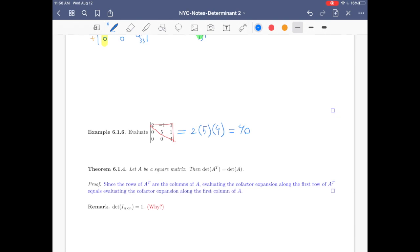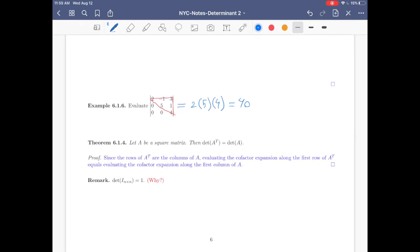Now, theorem 6.1.4. Let A be a square matrix. Then the determinant of A transpose equals the determinant of A. This is a very interesting result, which will be used later. This is kind of a sketch of proof. Since the rows of A transpose are the columns of A, evaluating the cofactor expansion along the first row of A transpose equals evaluating the cofactor expansion along the first column of A. Because you're switching rows and columns.